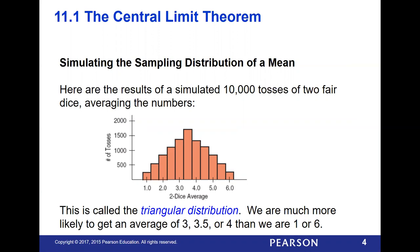If we were to take two dice and toss them 10,000 times, and we averaged the total of the dice — so if we took the numbers on the two dice, added them together, divided by two — this is the distribution we get. It's almost a perfect triangular distribution. We are much more likely to get averages between three and a half and four and a half. Much less likely to get one or six, which would require two ones or two sixes divided by two to get that average.